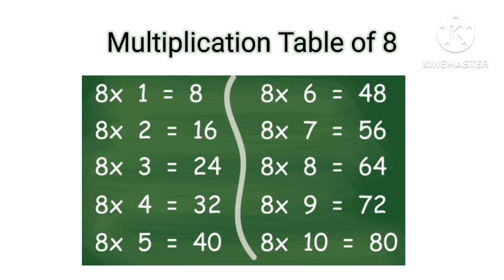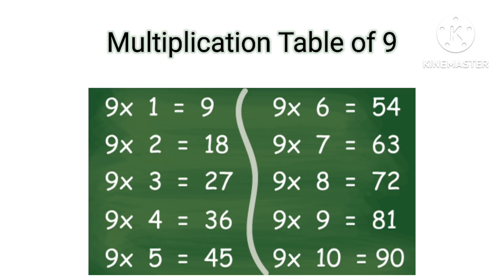Table of 8: 8×1=8, 8×2=16, 8×3=24, 8×4=32, 8×5=40, 8×6=48, 8×7=56, 8×8=64, 8×9=72, 8×10=80.